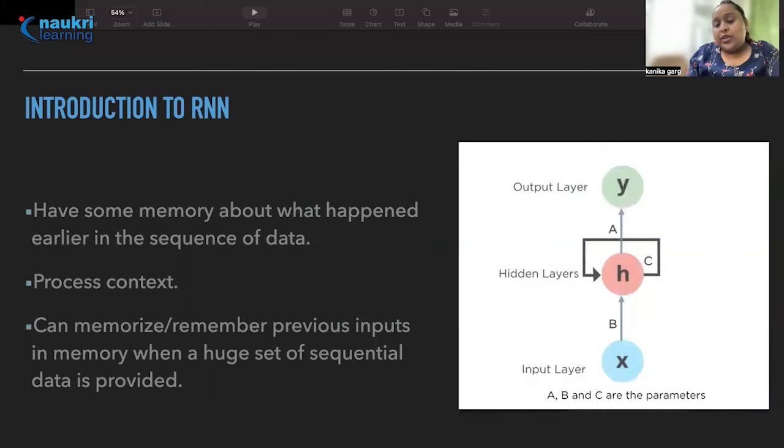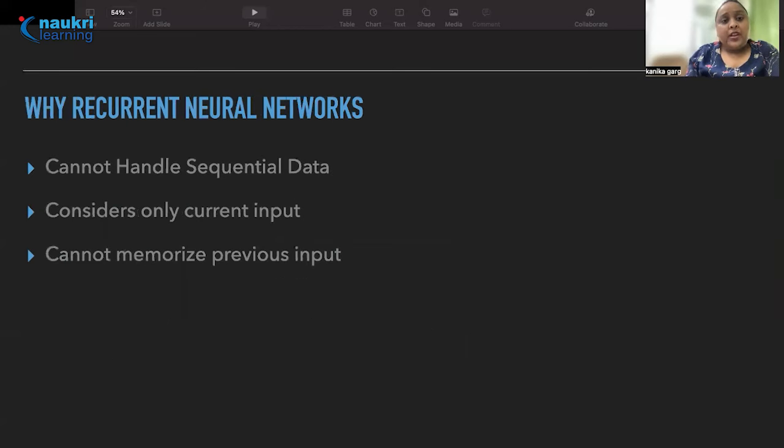So now you can see why we require neural networks. We have certain issues that we face with the feedforward neural networks. The issues were like they cannot handle sequential data because they do not have the memory to store any previous step and they can only consider the current input. Also it cannot memorize the previous input.